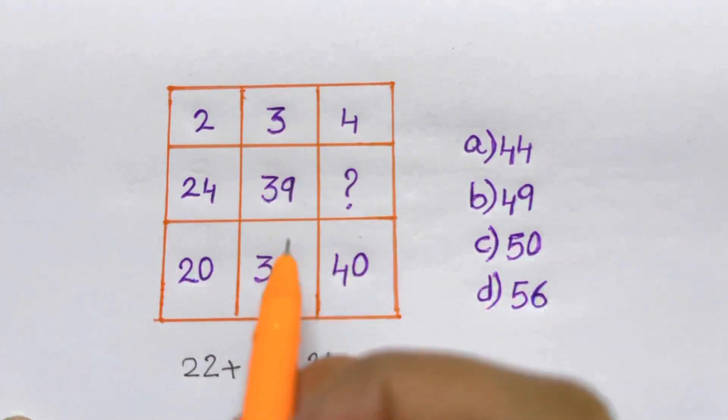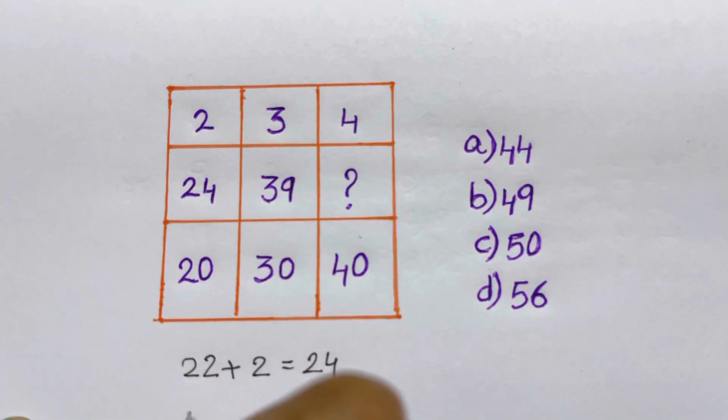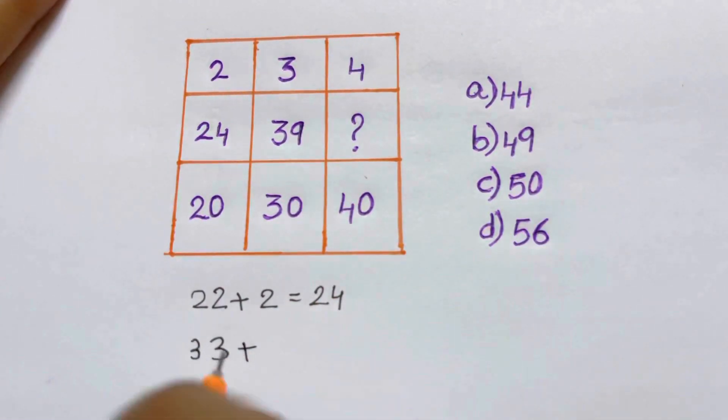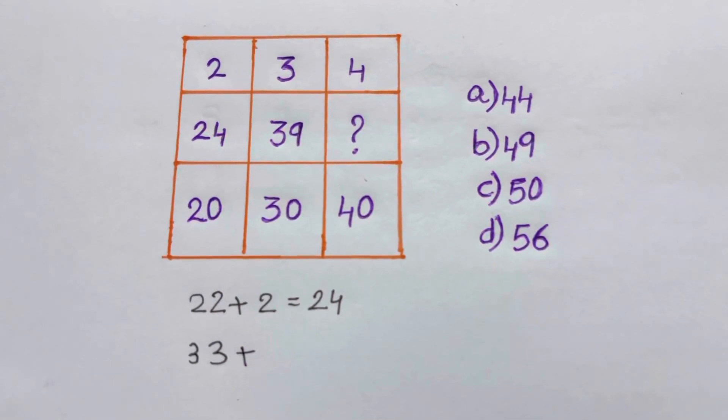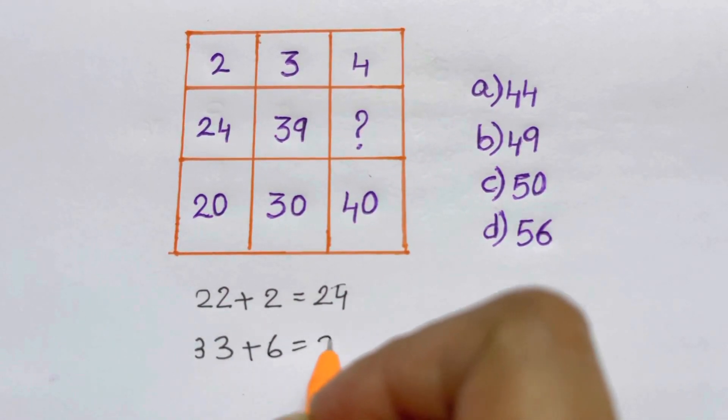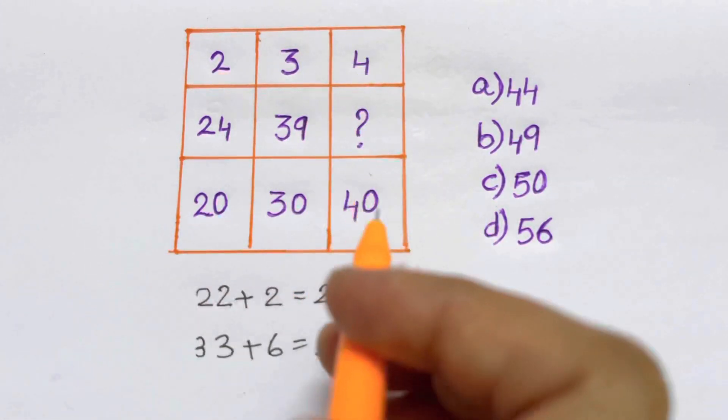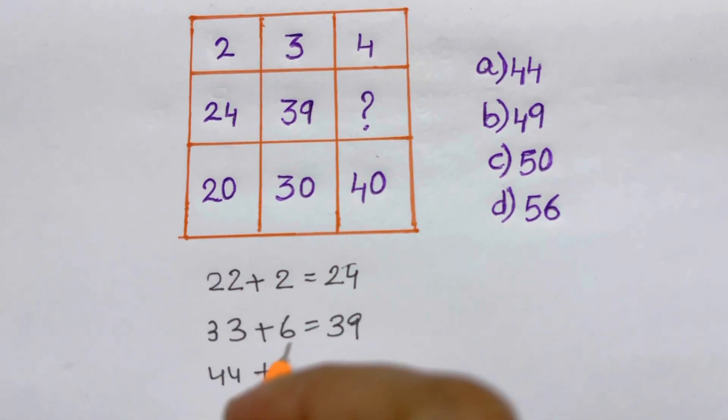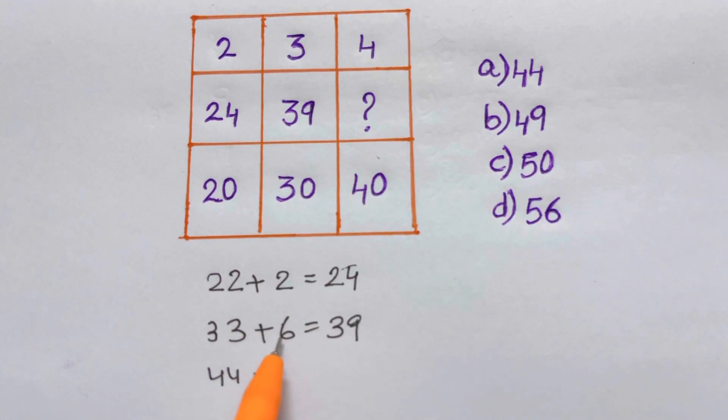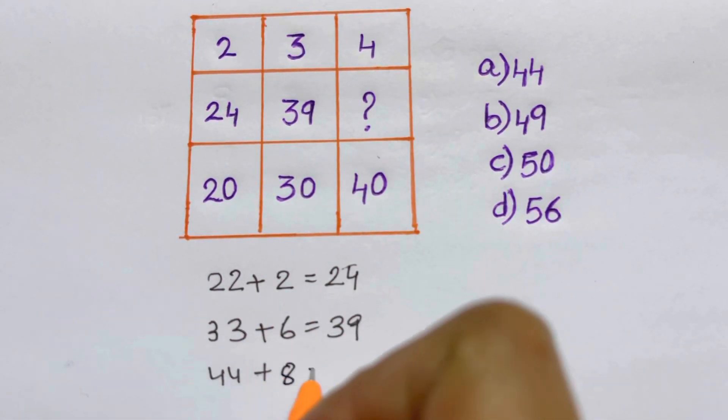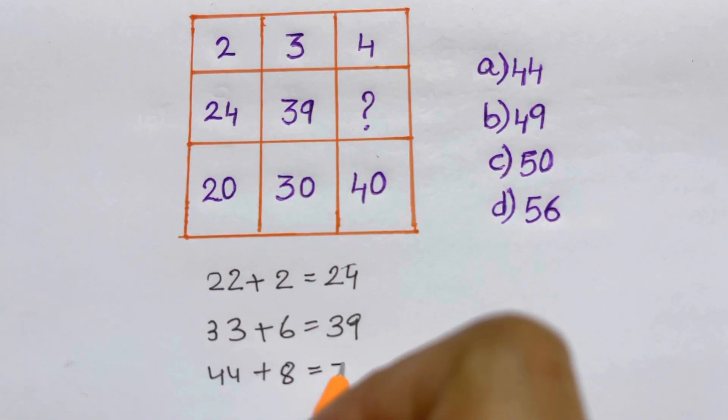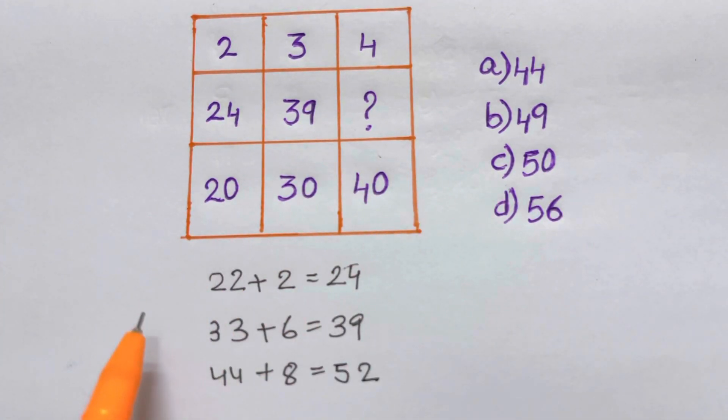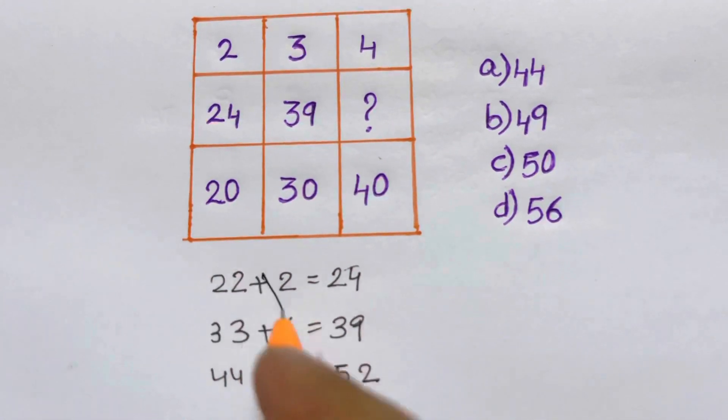Now for this one, 30 plus 3, I'll get 33, plus what am I going to add to get 39? So I can just add 6 to get 39. And for this one, 40 plus 4 will give me 44, plus what am I going to add? So here I've added 2, 2, and 6. They are even numbers, so I'll just add 8 here. That will give me 52. Oh no, that's not in the options anywhere. So guys, this will be a wrong method to solve.